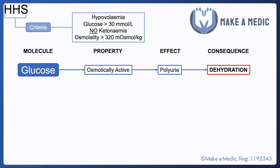The criteria for HHS exist on a bit of a spectrum between DKA and HHS, but they are fairly clear. Patients are usually very hypovolemic. Serum glucose concentration is greater than 30 millimoles per liter, and importantly there is no ketonemia — remember they have enough insulin to suppress ketones but not glucose. Finally, serum osmolality is more than 320 milliosmoles per kilogram.